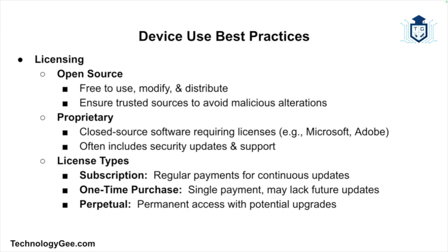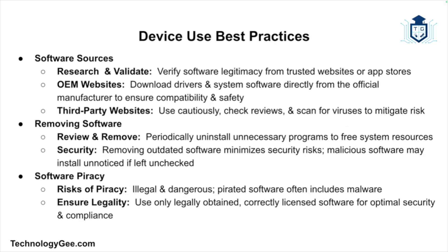Then we have subscriptions, one-time purchases, and perpetual licenses. A subscription license is paid regularly, providing ongoing access and updates. A one-time purchase grants access without future payments but may lack updates. A perpetual license allows for permanent usage but may include upgrades. Always verify licensing information, use legitimate product keys or serial numbers, and avoid using pirated software, which can introduce security risks.